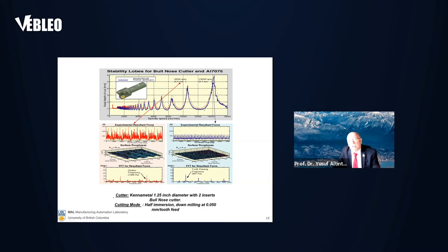So based on this theory, the most ideal situation is, let's say, 14,000 revolution per minute, and you can cut up to about 4 to 7 mm depth of cut, while at the low speed, only 1 mm depth of cut.